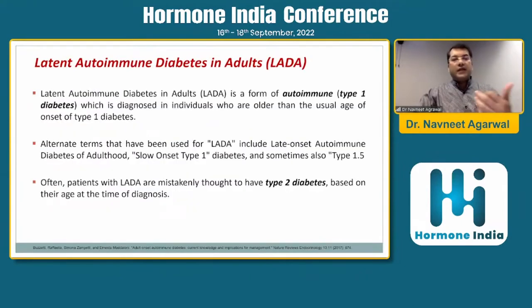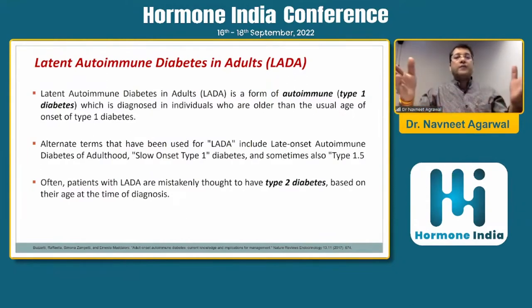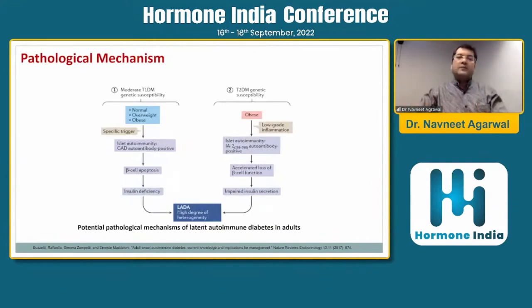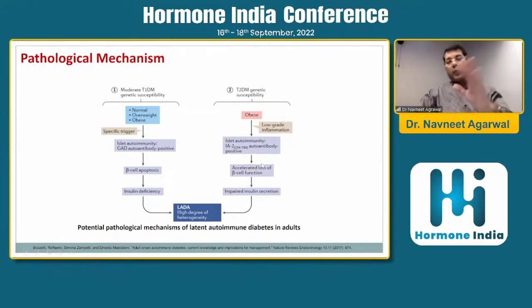Another form of diabetes seen in younger populations is LADA — Latent Autoimmune Diabetes in Adults. It is a form of autoimmune type 1 diabetes diagnosed in individuals older than the usual age of onset of type 1 diabetes. Alternative terms include 'type 1.5' or 'slow-onset type 1.' Often LADA patients are mistakenly thought to have type 2 diabetes due to their age. The pathological mechanism involves genetic susceptibility, a specific trigger, autoantibodies such as GAD antibodies, leading to beta cell apoptosis and insulin deficiency.